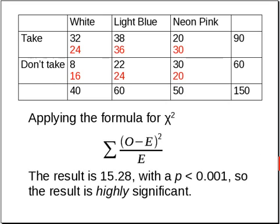If we apply the formula for chi-squared, again going over every cell, taking the observed minus the expected, squaring it, and dividing by the expected value, the result is 15.28. When you look that up in the table with two degrees of freedom, the probability is less than one in a thousand.